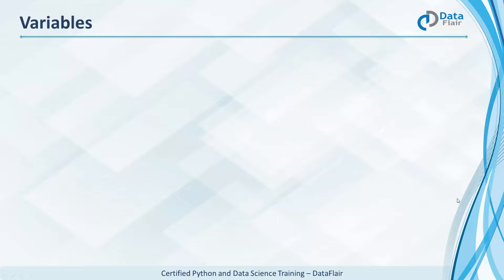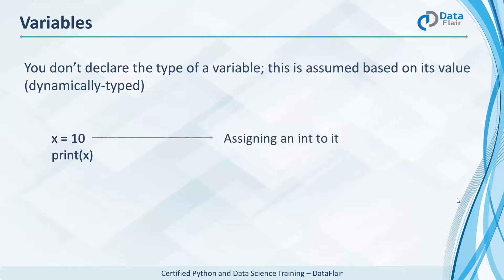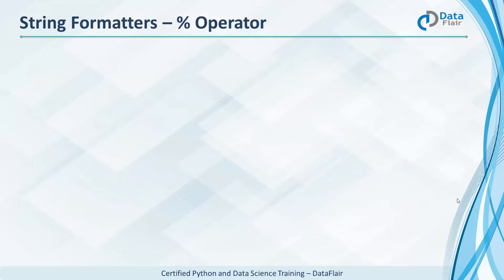Variables are a way to attach a name to an object or value so we can refer to it later. Since Python is dynamically typed, we don't need to declare the type of every variable — this is assumed at runtime. If we set 'x' to 10, at runtime x is assigned the int type. If we then store a string in x, x becomes a string type. The print function lets us print simple strings and values, but formatters let us do much more.